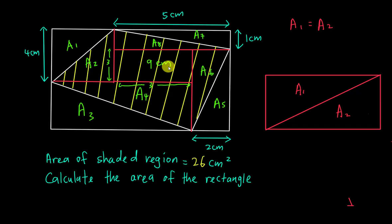Since I know the area of the shaded region is 26, how do I get 26? Basically, I can say area 2 plus area 4 plus area 6 plus area 8, which is this triangle, plus the 9, equals 26 centimeters squared. Because all these triangles added together plus 9 will give us 26.